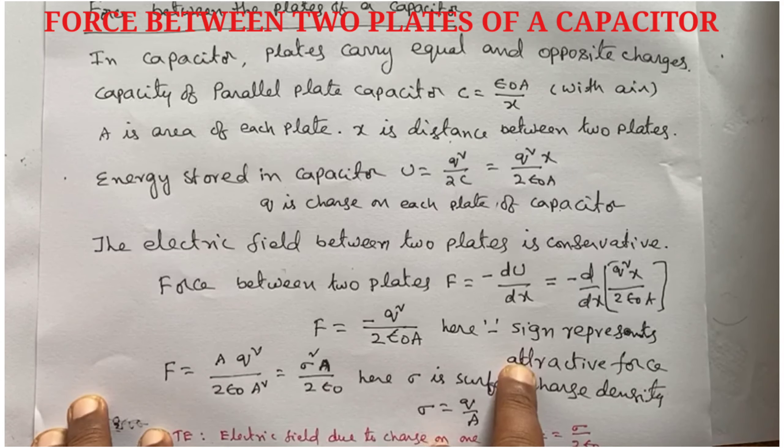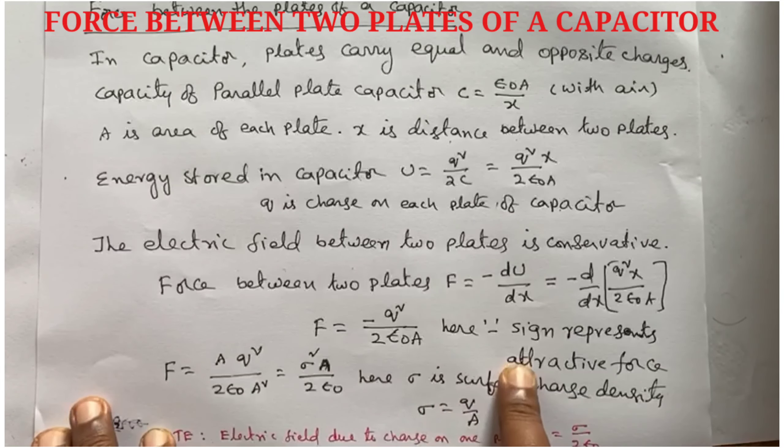The electric field between the plates is conservative. Force between two plates F equals minus dU by dx. This gives the relation between the conservative force and energy stored: F equals minus dU by dx.